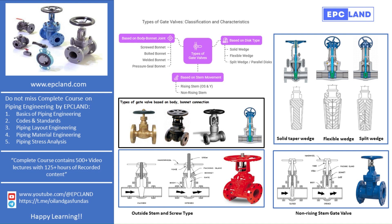Now let's move to the second classification: types of body and bonnet joints. This classification is based on how the valve body is connected to its top part called the bonnet. The screwed bonnet is the most basic design, used in low-cost valves where high pressure or temperature is not a concern. The bolted bonnet is the most commonly used design. A gasket is used between the body and the bonnet to ensure tight sealing, and this design is easy to disassemble for maintenance.